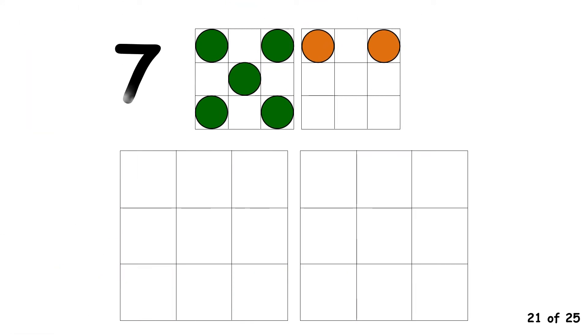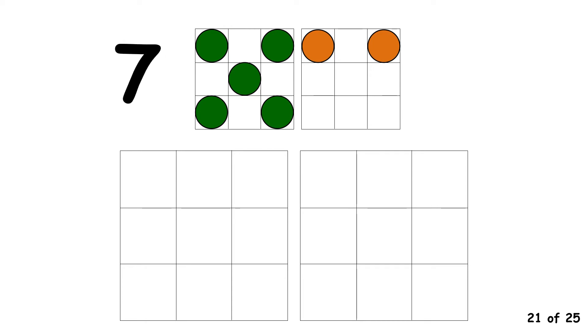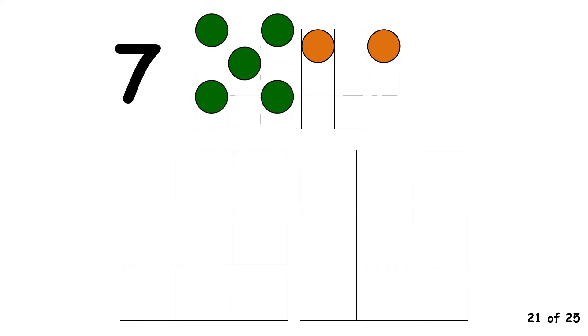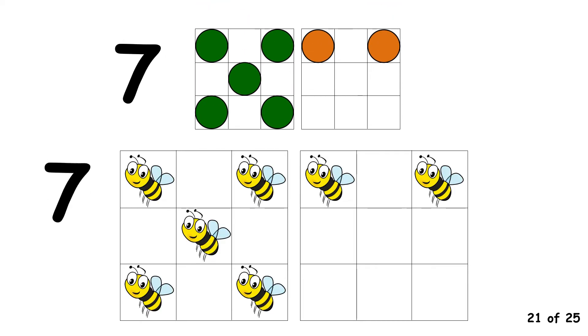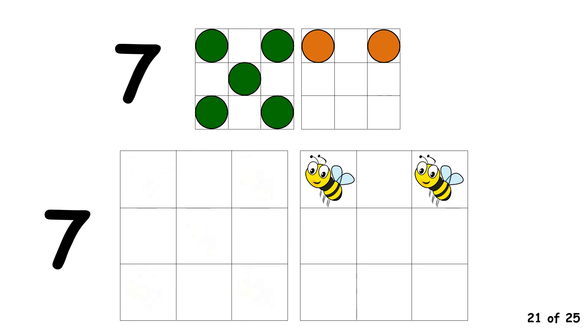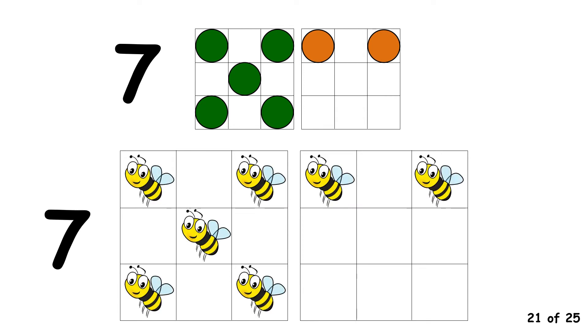Seven. Seven is made with five and two. Seven is made with five and two.